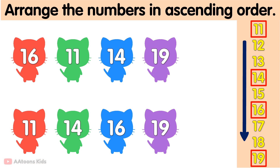So finally, ascending order of 16, 11, 14, 19 is 11, 14, 16, 19.